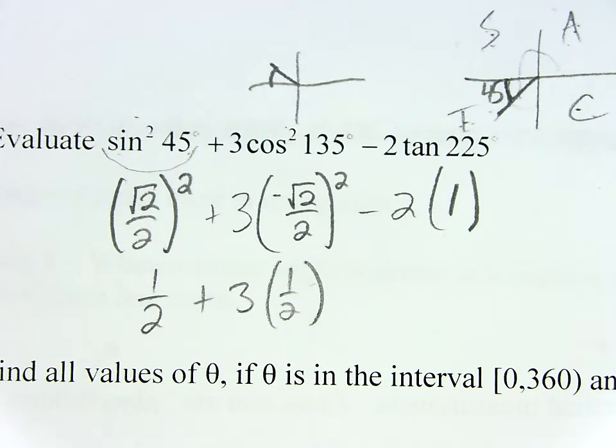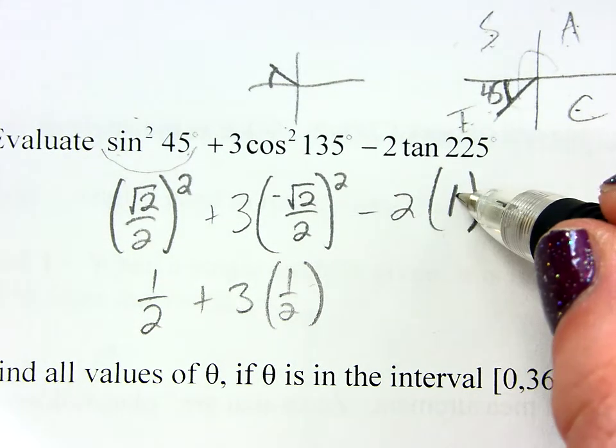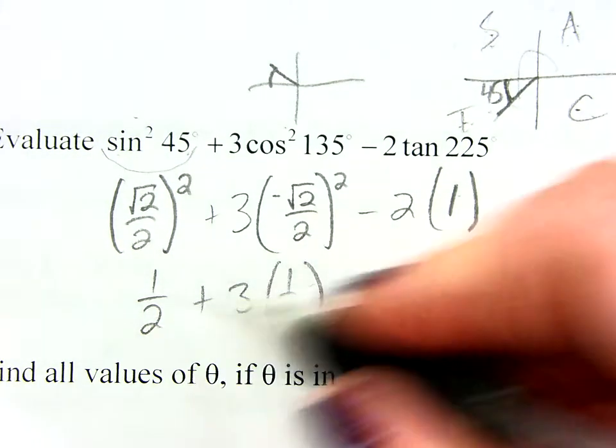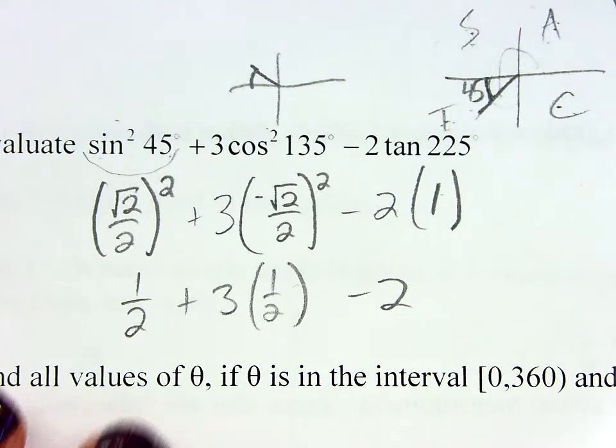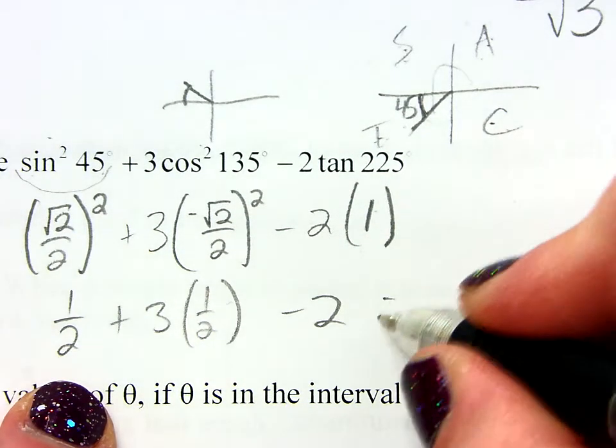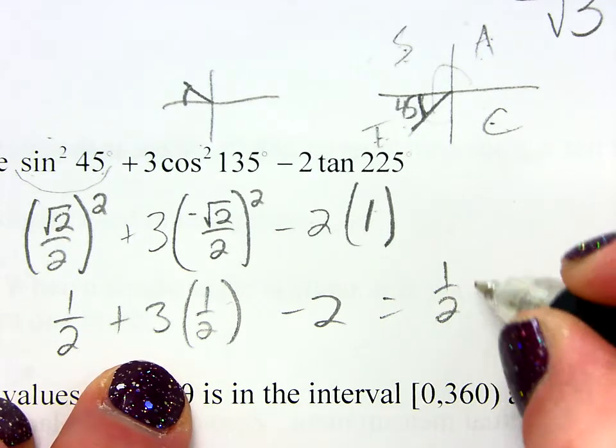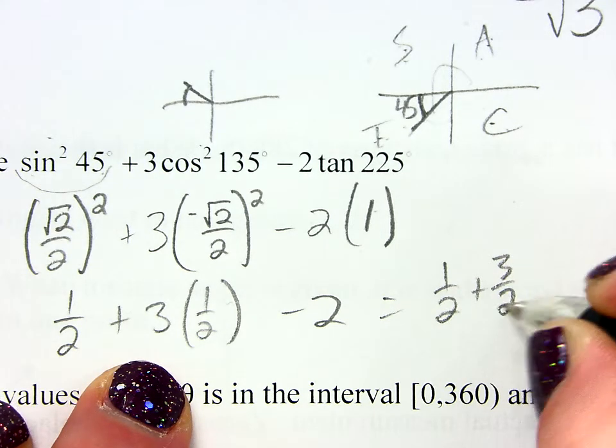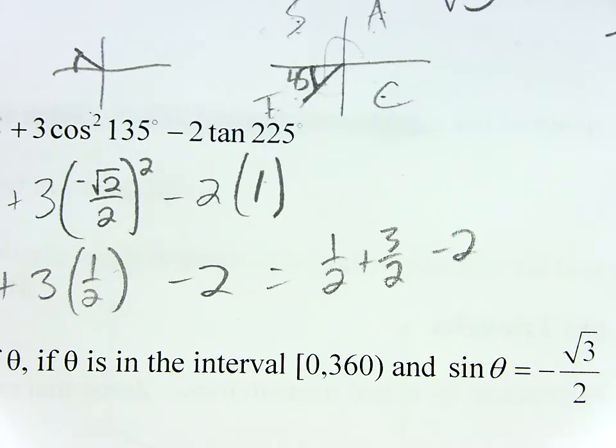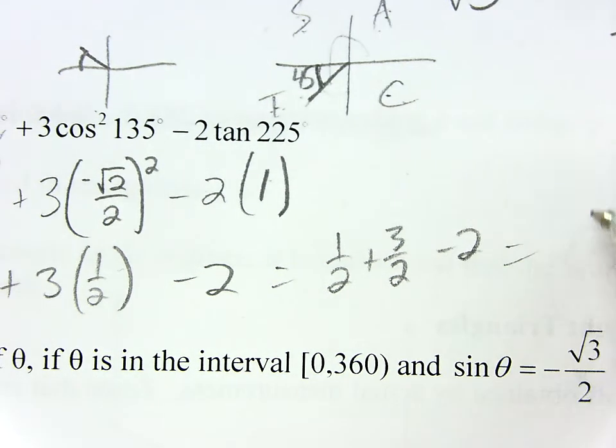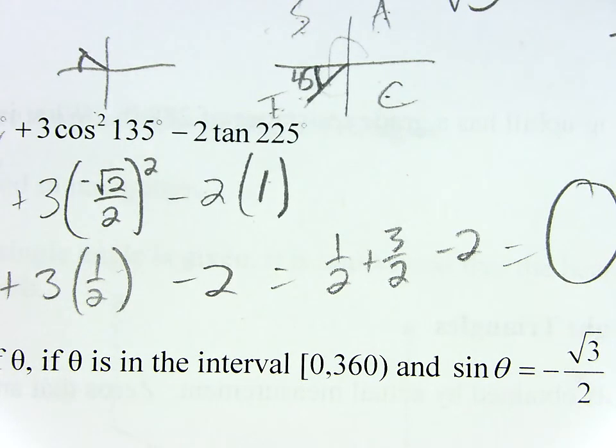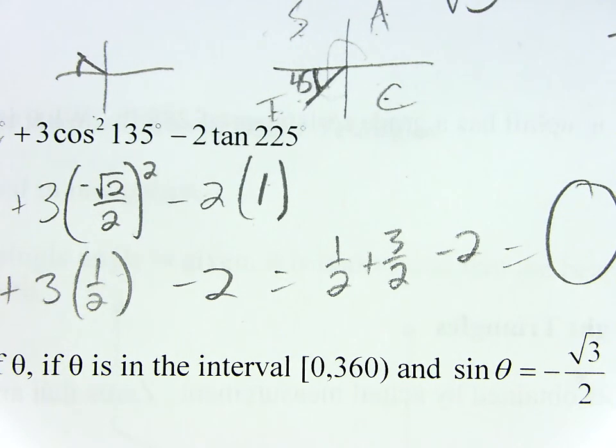Alright. So now that I know that that's a positive 1, negative 2 times 1 is just a negative 2. So now I just have this math to do, and that should be easy enough. So let's see. That's a half plus 3 halves minus 2. What's a half plus 3 halves? My final answer ends up being 0 in this case. Because I get 4 over 2 minus 2, which is just 0. Alright, alright.